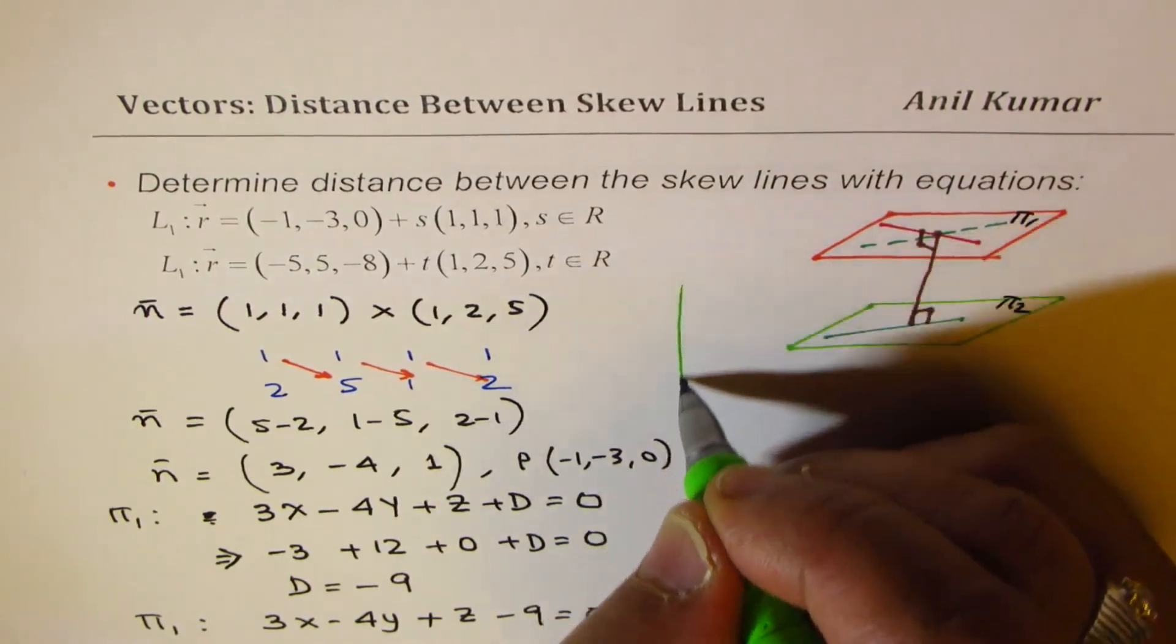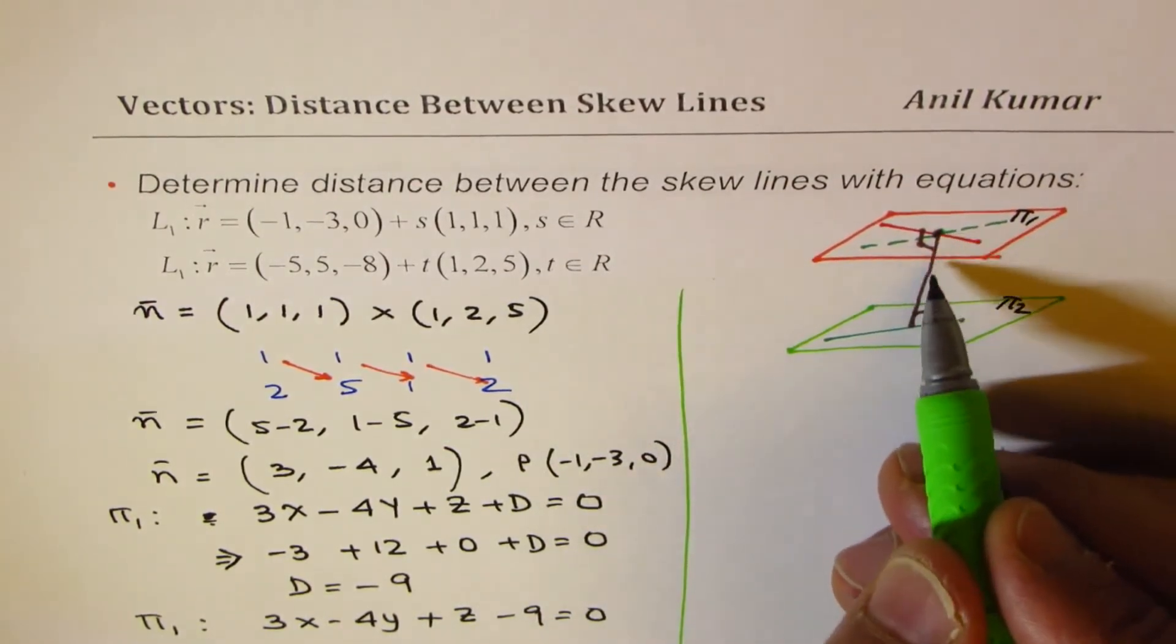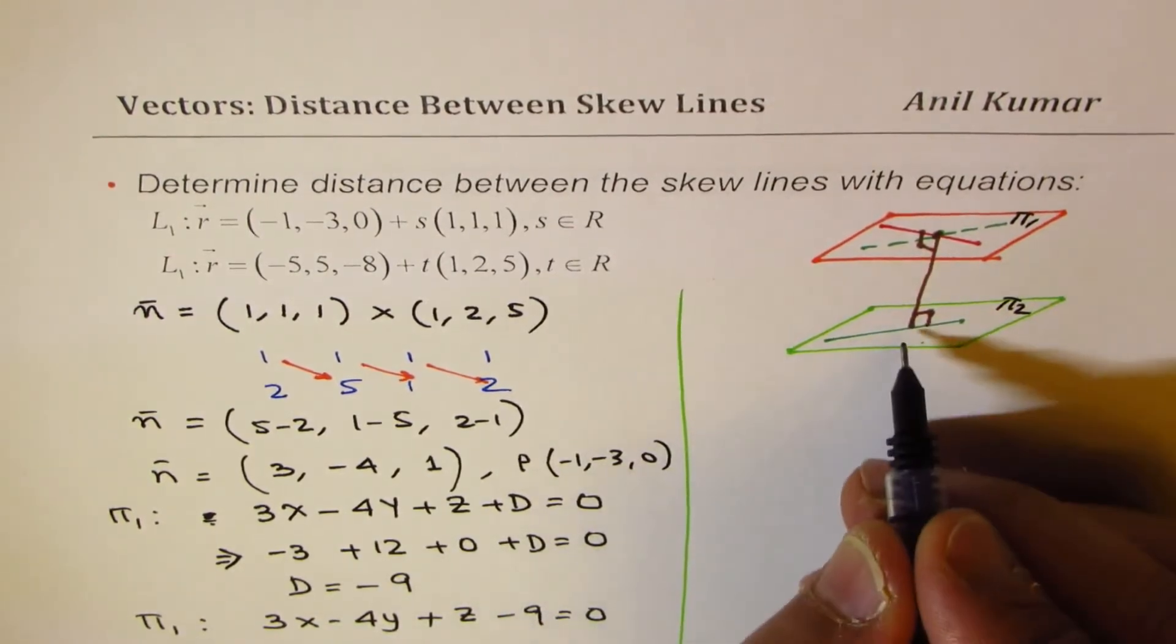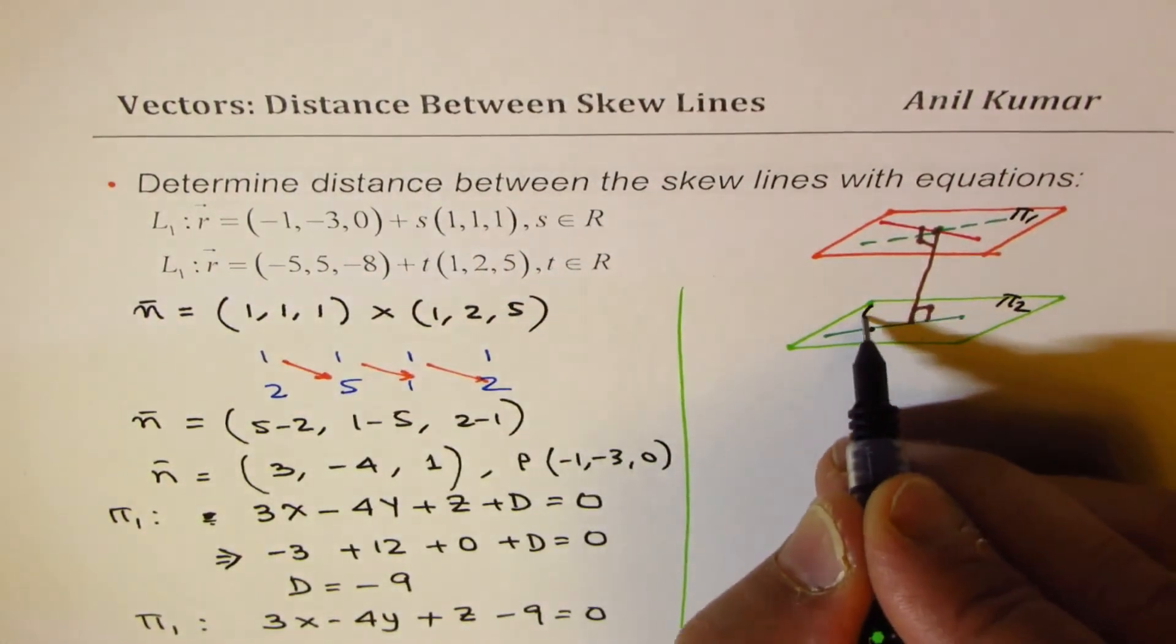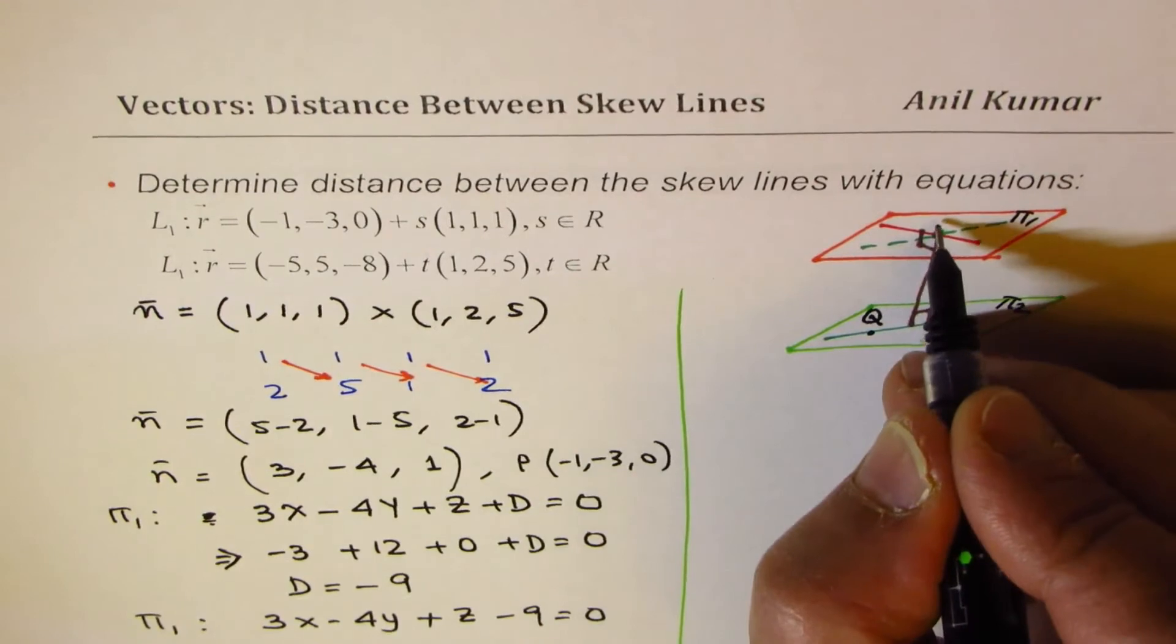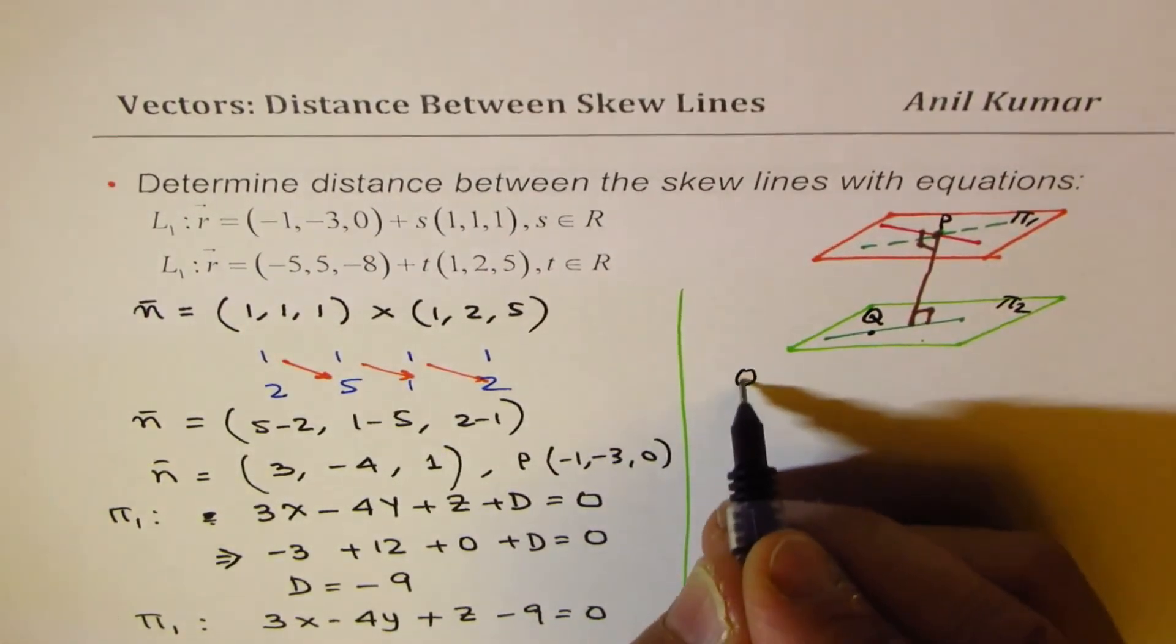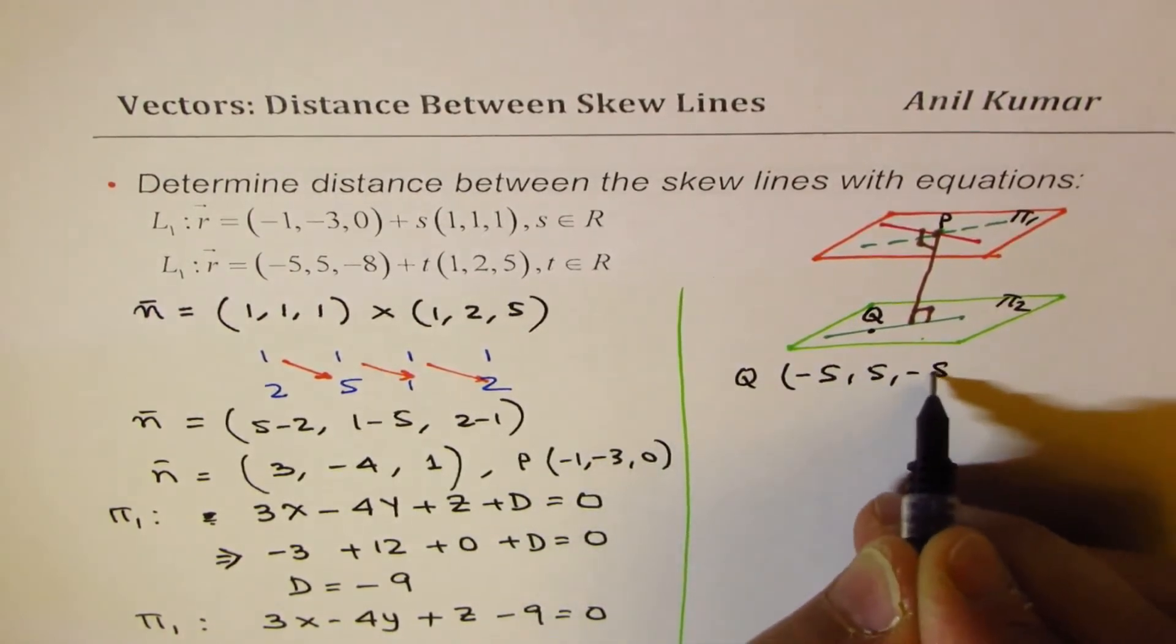Now, once we have the Cartesian equation, we can easily find the distance of any point here with the plane. So now we'll consider the point given in this plane. Let's say the point given is q, like this, this is q. We have assumed that point p on π1. So now we have point q as minus 5, 5 and minus 8.